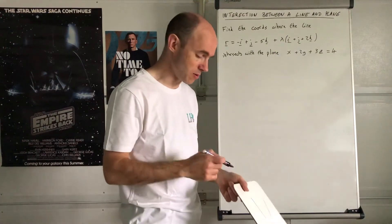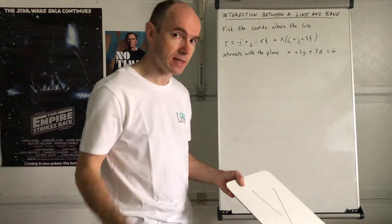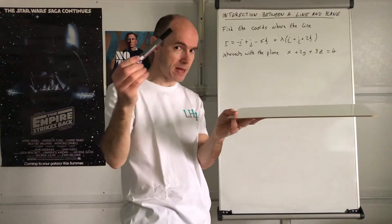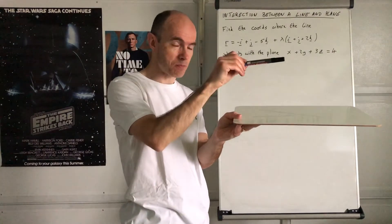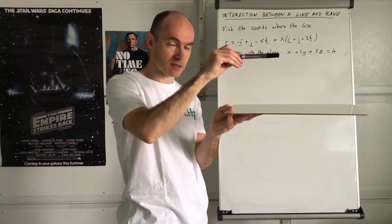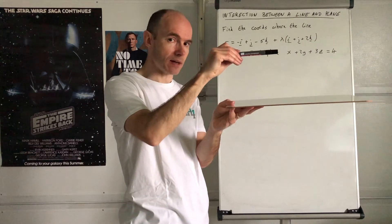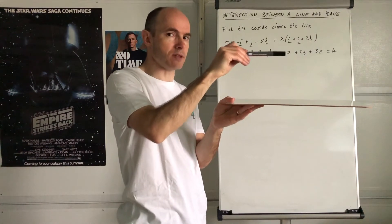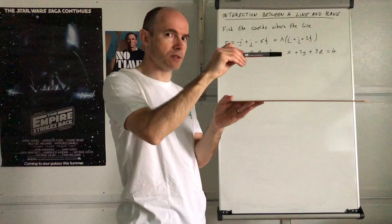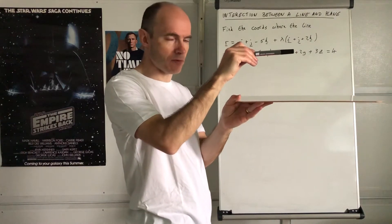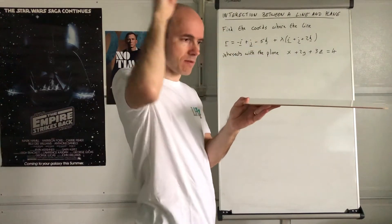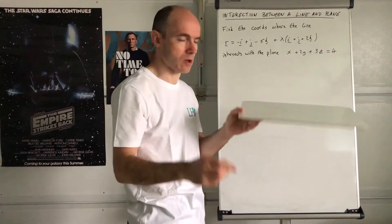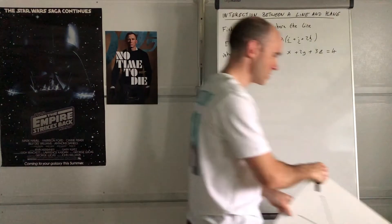There's another possibility: the line itself is parallel to the plane. For example, that pen could be a line, and this plane - you can see they're parallel, they don't intersect. So there are lots of different scenarios. But the one we're going for here is where you've got a line that intersects the plane at just one point, and that's what our question is about.